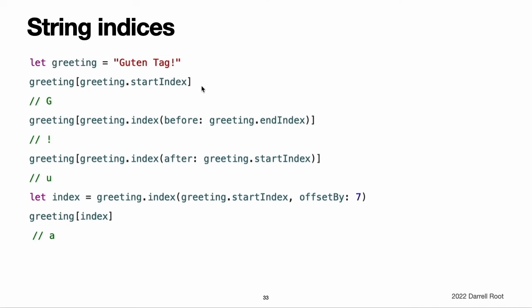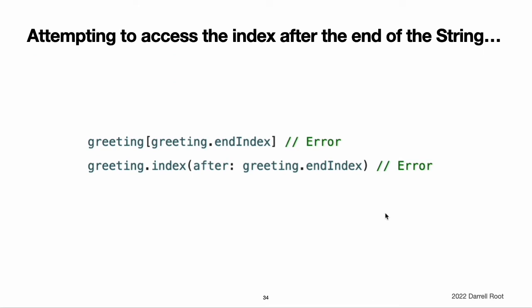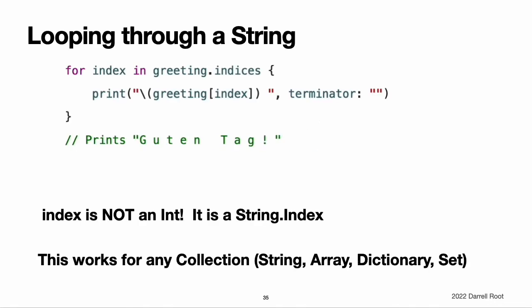Use the startIndex property to access the position of the first character of a string. The endIndex property is the position after the last character in a string; as a result, the endIndex property is not a valid argument to the string's subscript. If a string is empty, startIndex and endIndex are equal. You can access the indices before and after a given index using the index(before:) and index(after:) methods of a string. To access an index further away from the given index, you can use the index(_:offsetBy:) method instead of calling one of these methods multiple times. You can use subscript syntax to access the character at a particular string index.